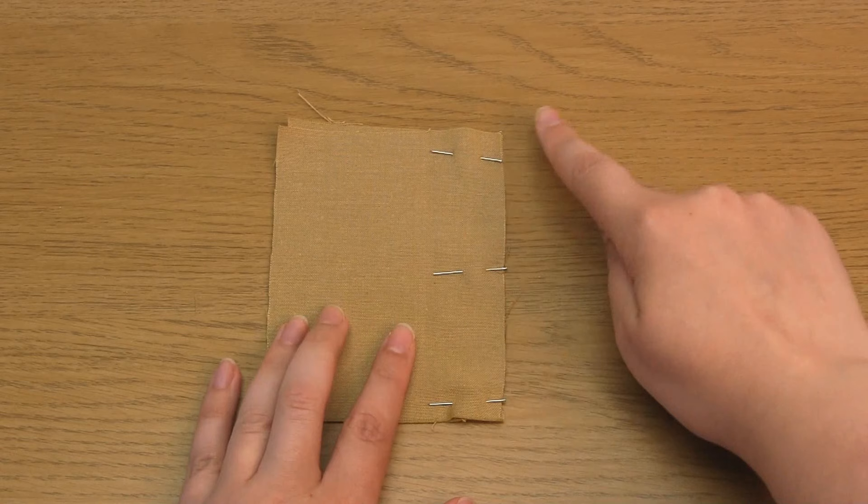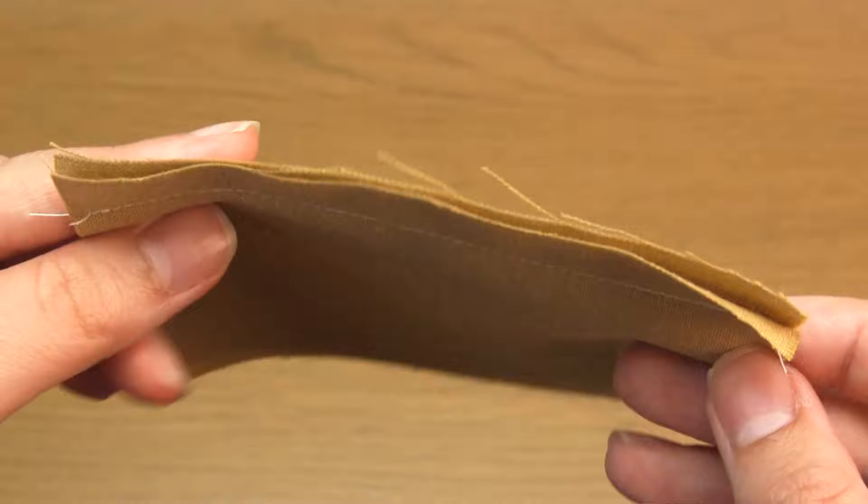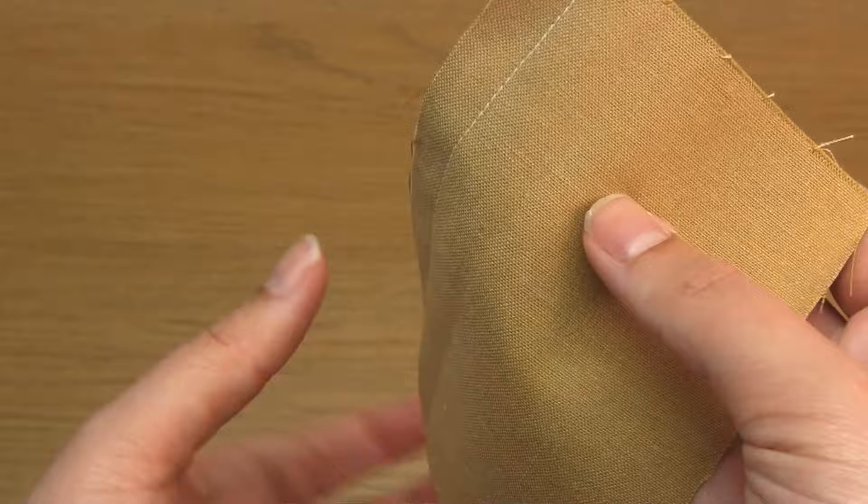So in this example I sewed half an inch from the edge. You'll need to use a straight stitch to do this, and an appropriate needle and stitch length for your fabric. I used a contrast thread so you could see it clearly, but you would use a matching thread.